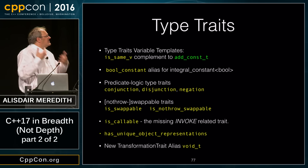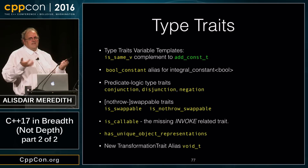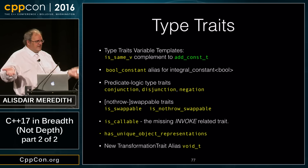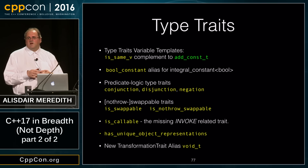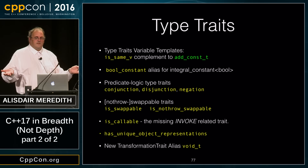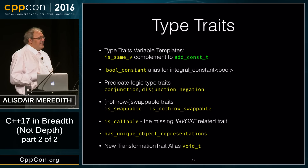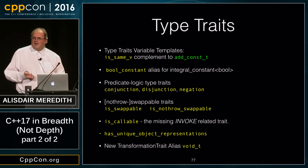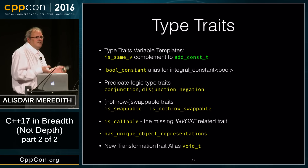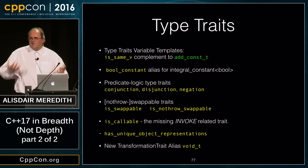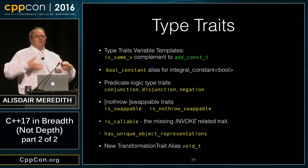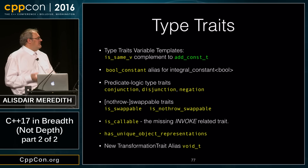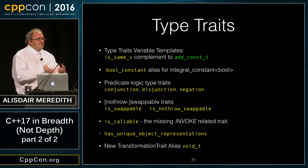bool_constant is our new alias for integral_constant<bool>. I wasn't excited when it came in, but writing code with it, things look so much neater and cleaner — and that's a lot of what we're getting from C++17 idiomatically: simpler and cleaner code.